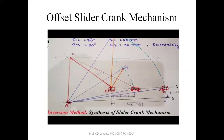In the inversion method, we know the second and third positions as well as the initial position for the four-bar chain mechanism, and from the second and third positions we find the first position for the offset slider crank chain mechanism. Such a method is called the inversion method. For study purposes, these two mechanisms — the four-bar chain and offset slider crank chain — have been considered.